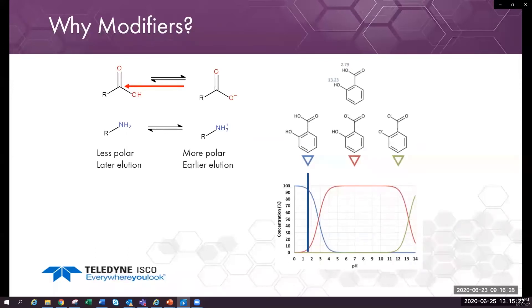At low pH, salicylic acid is mostly unionized and is a neutral molecule. It elutes late from reverse phase.